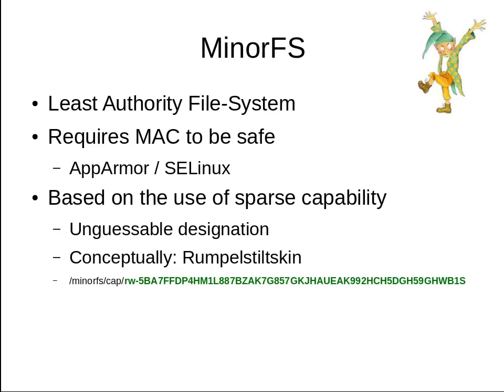The fourth and last ancestor of the MattoCFS forensic file system is MinorFS. MinorFS is a least authority file system based on the use of sparse capabilities. Basically, a sparse capability is an unguessable designation. Conceptually, the fairy tale figure Rumpelstiltskin can be seen as a good example of how a capability works — it is an unguessable name that gives you some authority over what you are accessing. MinorFS on itself is not safe and also requires mandatory access controls such as AppArmor or SELinux.